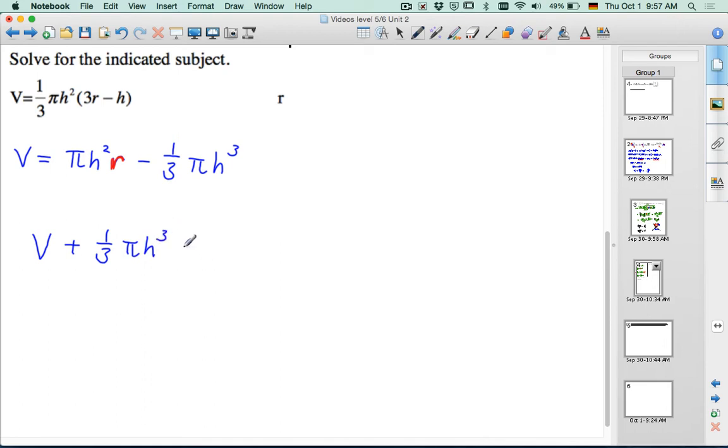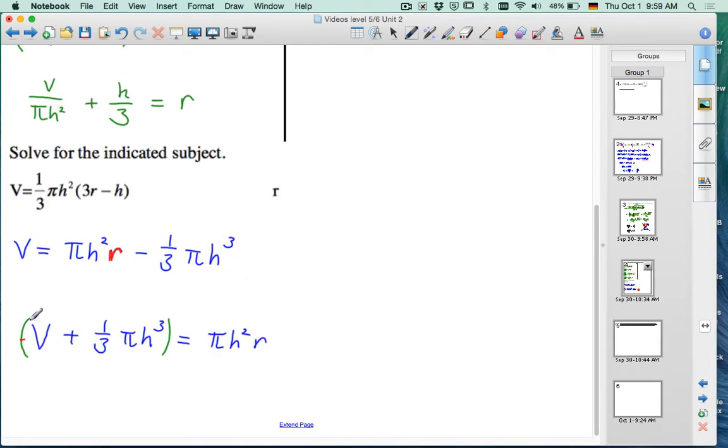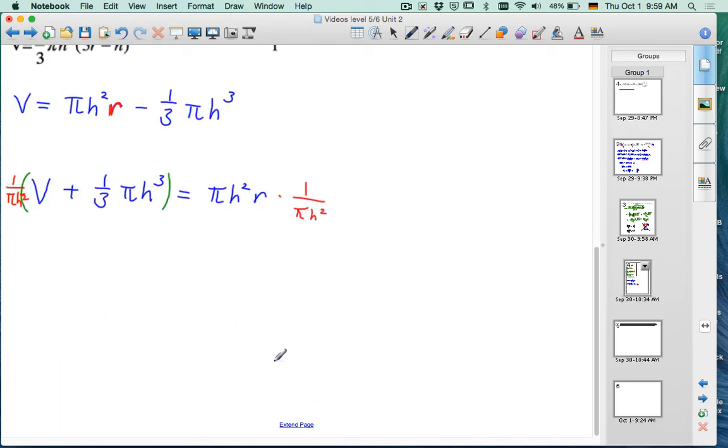So, we can add 1/3 π h³ to both sides. Oh, 1/3 π h³, sorry, not squared. And next? We can divide both sides by π h². So, if we use the same strategy as before, you divide by π h² to get r on its own, and that's the same as multiplying by 1 over π h². The nice thing about this is you can easily see when it distributes to both terms on the left-hand side.